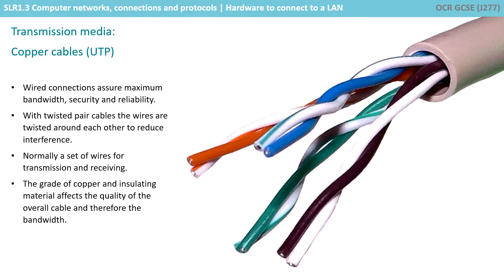Connections between desktop computers and a switch or router are usually achieved with a wired connection. This ensures maximum bandwidth, security and reliability. The wired connections are made of twisted pairs of wires which are twisted around each other to reduce interference. There is normally a set of wires for transmission and a set of wires for receiving data. Different grades of copper and insulation material can affect the quality of the cable and therefore the bandwidth. These copper cables are referred to as twisted pair, unshielded twisted pair UTP, Cat5, Cat6 or Ethernet cables.